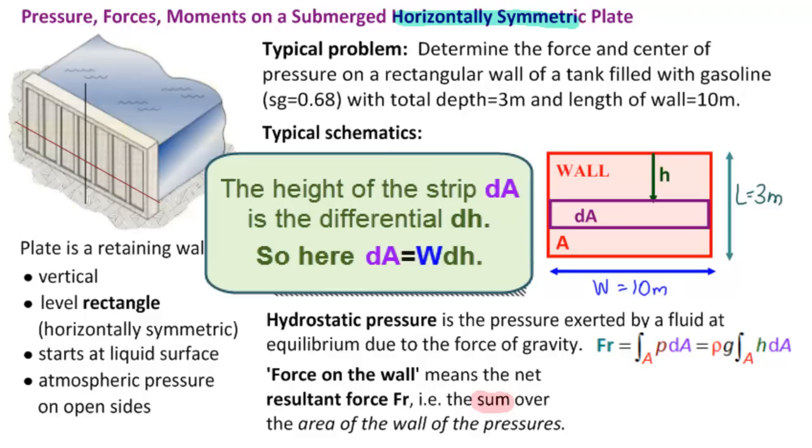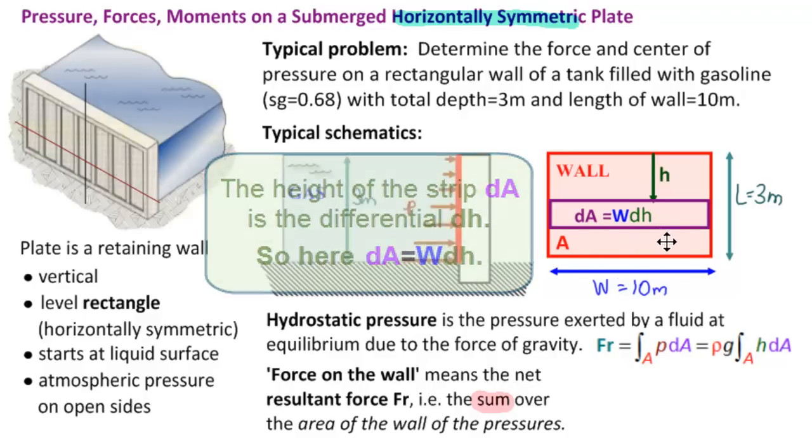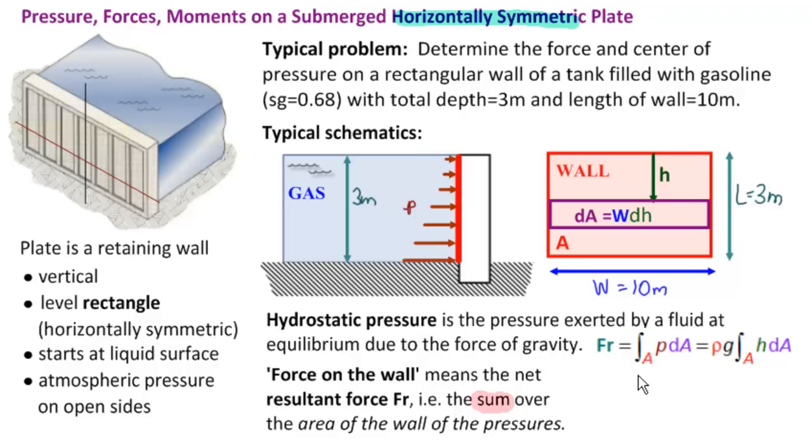So the width is just W. So right now we have dA equals W dH, and the two-dimensional integral on A has been reduced to a one-dimensional integral on H, H equal to zero to H equal to L. So this double integral for a rectangle becomes this easy to calculate single integral. And in fact for any horizontally symmetric shape we can either find W and do the integral, or we can use what's called the centroid formula to find the resultant force. That's why we like horizontally symmetric plates.